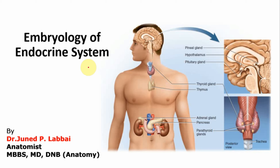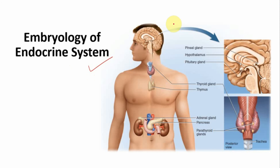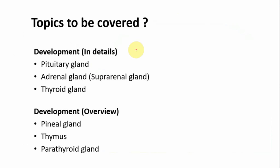Hello everyone. In this session we will be learning about the embryology of the endocrine system. The endocrine system is formed by endocrine organs — the organs which secrete their secretions directly into the bloodstream. We will be covering the development of the pituitary gland, adrenal gland, and thyroid gland in detail, and I will give a brief overview of the pineal gland, thymus, and parathyroid.